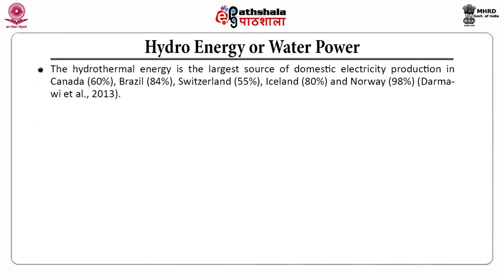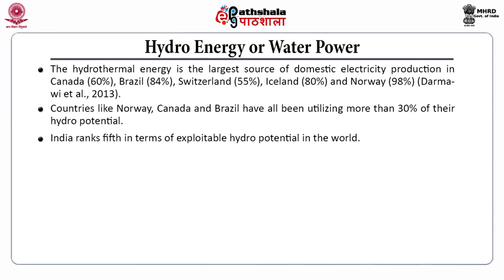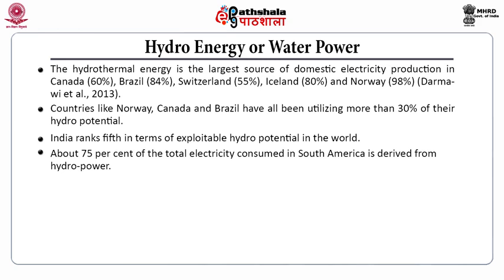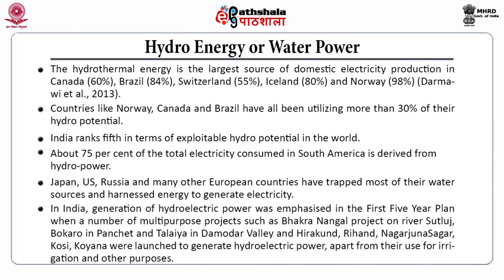However, building a dam leads to several environmental problems such as submergence of plant and animal habitats and displacement of local inhabitants including tribals. Hydroelectric energy is the largest source of domestic electricity in Canada (around 60%), 84% in Brazil, 55% in Switzerland, 80% in Iceland, and 98% in Norway. Countries like Norway, Canada, and Brazil have been utilizing more than 30% of their hydro potential, while India ranks 5th in exploitable hydro potential. About 75% of total electricity in South America is derived from hydropower. In India, hydroelectric power was emphasized in the first five-year plan with multi-purpose projects such as Bakra Nangal on River Sutlej, Bokaro, Damodar Valley, Hirakud, Rehan, Nagarjuna Sagar, Koshi, and Koyana.